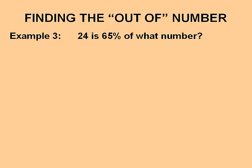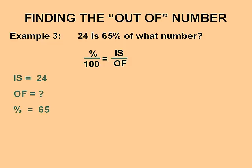In Example 3 we're finding the 'of' part of the equivalent fractions: 24 is 65% of what number? We write down percent over 100 equals is over of. This time 'is' is associated with 24, we are looking for 'of,' and the percent is 65. Substituting gives us 65 over 100 equals 24 over something. Try your estimating skills and write your number down.